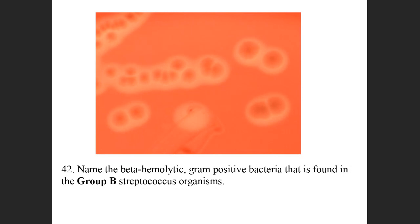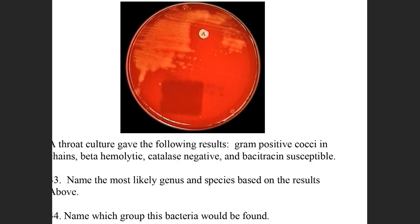Here is an organism that's beta hemolytic, gram-positive, found in Group B Streptococcus. What is the species? Streptococcus agalactiae. And a culture gave: gram-positive cocci, beta hemolytic, catalase negative, bacitracin sensitive or susceptible — what's the genus and species? Streptococcus pyogenes — and what group does that belong to? Group A. There's a reason it's the A-disc.